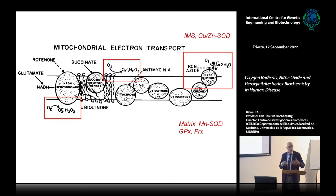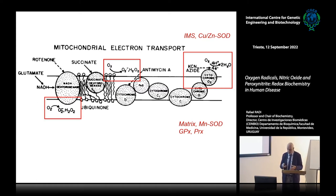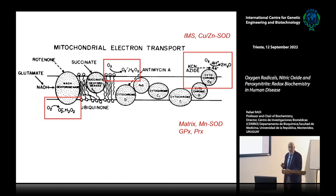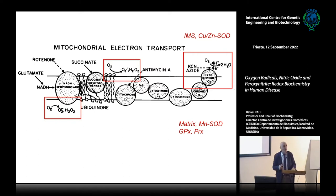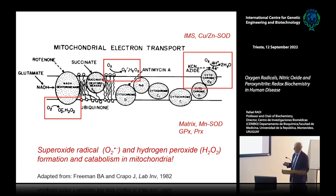To cope with this continuous formation of reactive oxygen species, mitochondria, the cytosol, and different organelles contain an array of antioxidant enzyme systems, including superoxide dismutases in the intermembrane space and in the matrix, and hydrogen peroxide decomposer enzymes including glutathione peroxidases, which are selenium-containing, and most notably the thiol-containing peroxiredoxins, which in the last decade have become a major actor in regulating human redox biology. This was adapted from my mentor, Bruce Freeman, who initiated some of these theories in the 1980s.